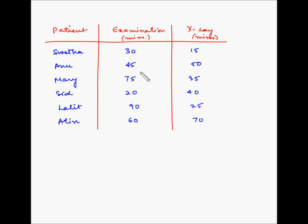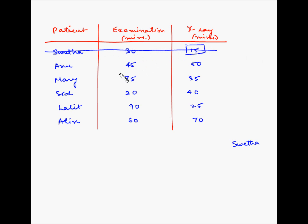The shortest operation time is for the x-ray machine for Shweta. Since it is on the second operation, we will schedule her towards the end of the sequence. Now since we have already sequenced her, we will strike through this line. The next shortest operation time is for Sid, and since this is for the first operation, we will schedule him at the beginning of the sequence. Let's strike through this line as well.